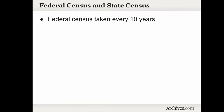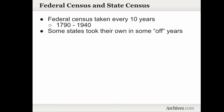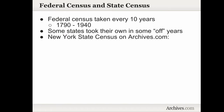The Federal Census includes the entire United States and is taken every 10 years. The first one was taken in 1790, and the most recent one available for us to use is the one taken in 1940. Now, some states took their own Census in some of the off-years — a year that a Federal Census wasn't taken. New York is one of those states, and there are three New York State Censuses available on Archives.com: 1892, 1915, and 1925.